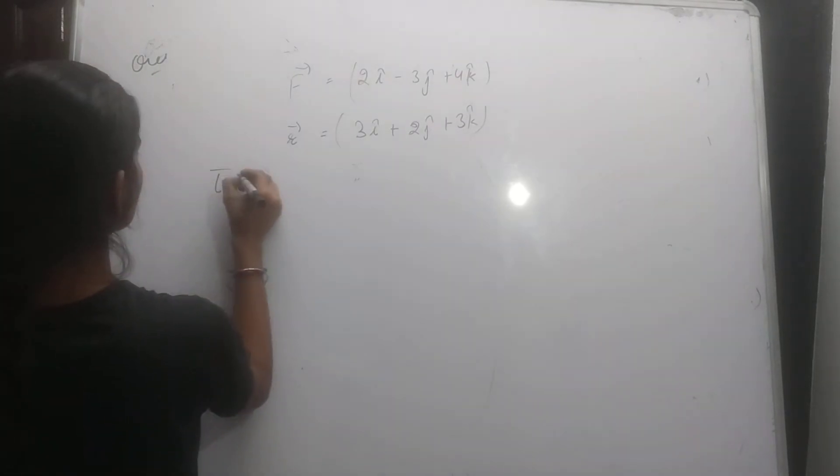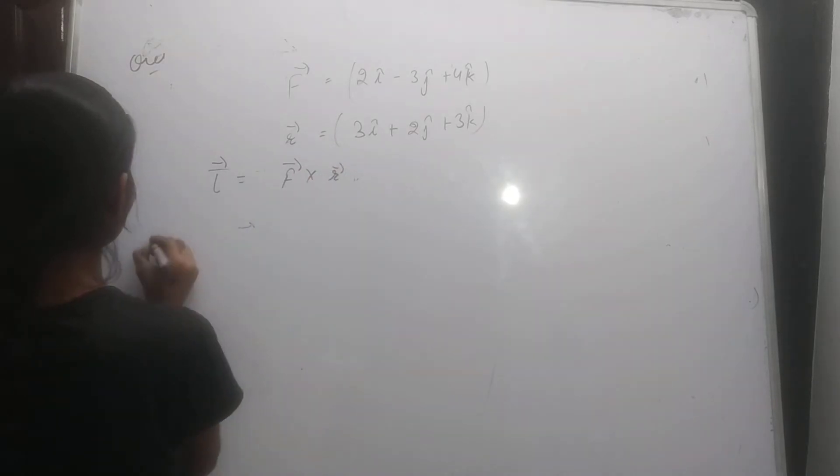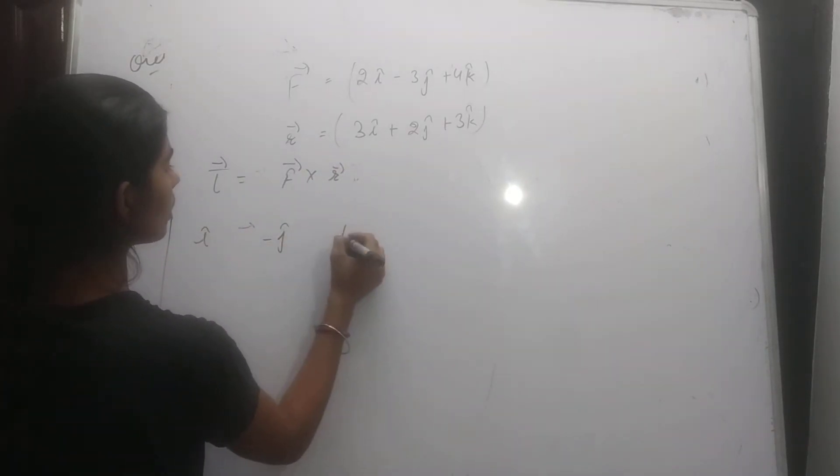So tau vector equal to F vector into R vector. i cap, j cap, k cap.